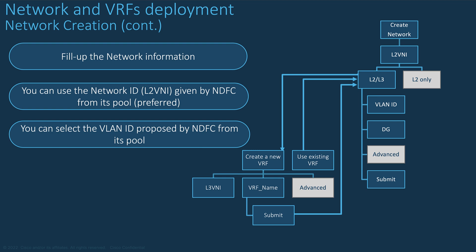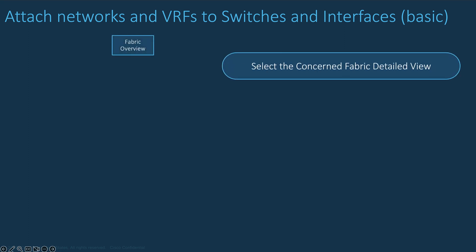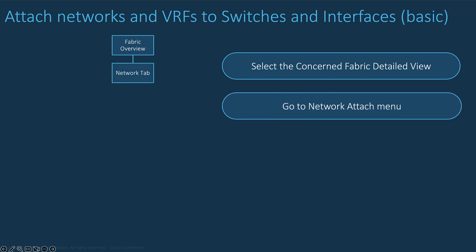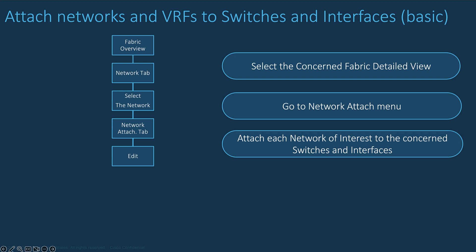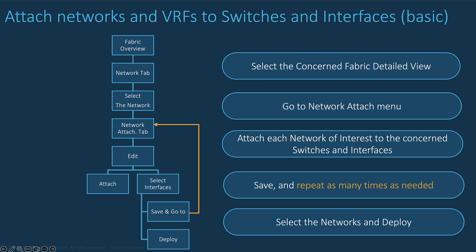Notice that some parameters of the network can be modified afterwards if needed. Now let's look at the overlay networks and VRF attachment. Go to the detail view of the concerned fabric and open the Network tab. Double-click on the network you wish to attach to the switches and interfaces. Open the Network Attachment tab, select all the switches, edit the overlay network, enable Attach if not already enabled, and then select the interfaces. Repeat for the next switch and interfaces. Save and repeat for all networks to be deployed.